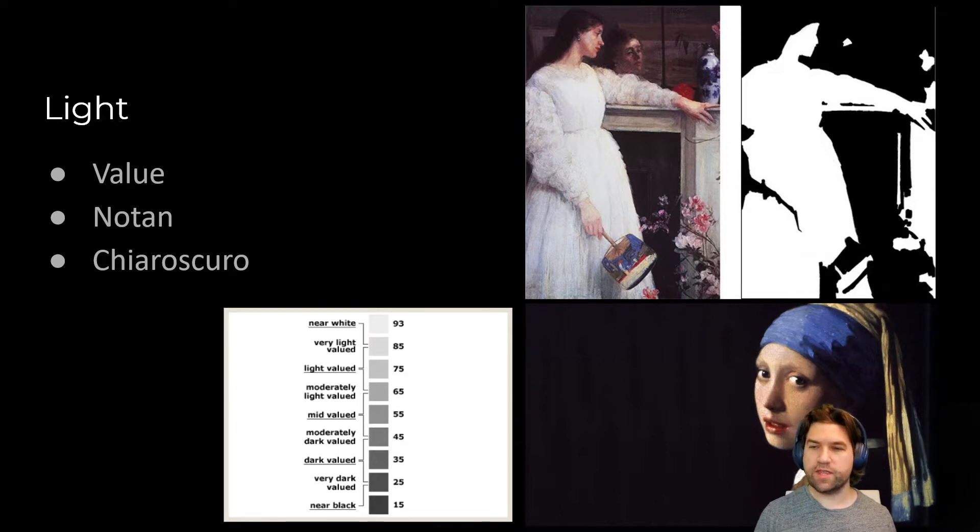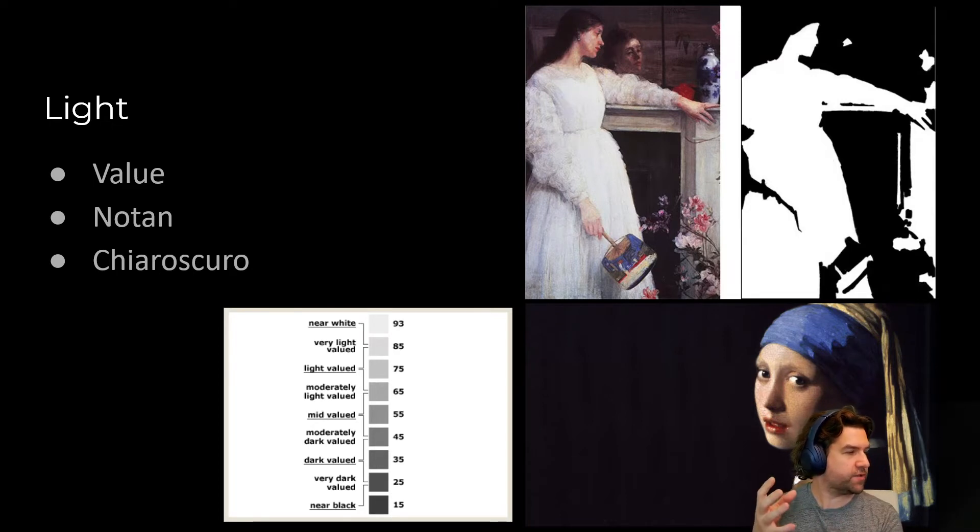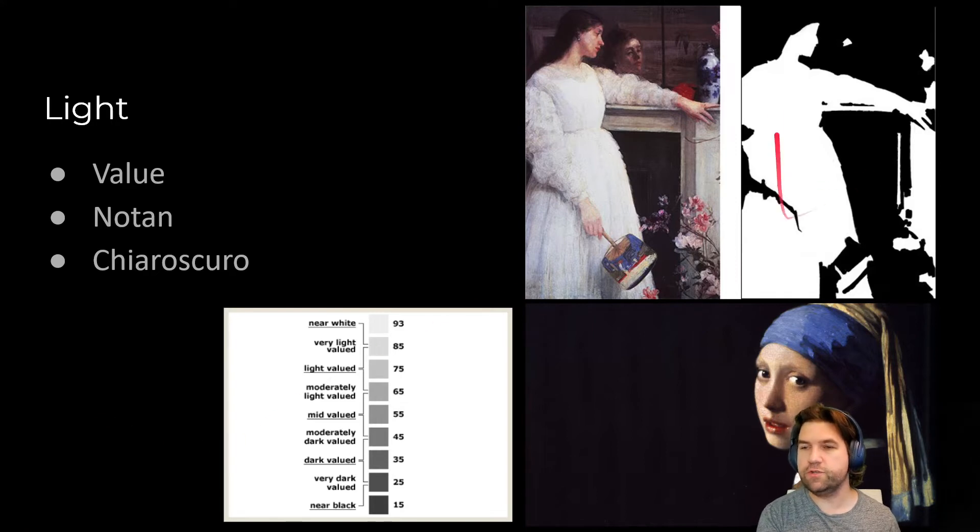The next thing we want to think about is what we call the notan. This is what is in light and what is not. It's almost as if we threw it into something like Photoshop and really bumped up the contrast. What are the areas of light and what are the areas of dark?